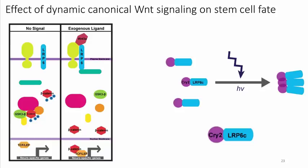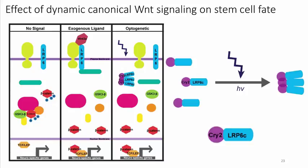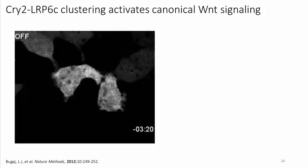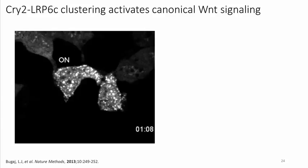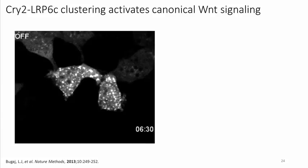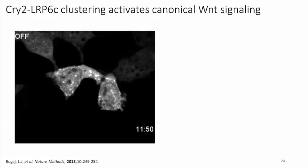We infiltrated the system by fusing Cryptochrome 2 (CRY2), a blue light-responsive protein from Arabidopsis, to LRP6. Upon blue light exposure, CRY2 forms homo-oligomers, clustering its LRP6 cargo as well. Clustered LRP6 is sufficient to initiate the downstream canonical Wnt pathway. Lucas Bugay, a previous grad student, characterized the CRY2-LRP6 oligomerization by fusing it to mCherry, showing visible clustering within 20 seconds of blue light exposure, which dissipated in 10 to 15 minutes when light was removed.